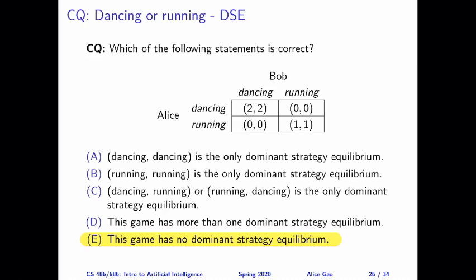Unfortunately, this means that the dominant strategy equilibrium solution concept is not sufficient to capture our intuition about this game. Intuitively, we believe that dancing-dancing or running-running are both reasonable outcomes, but dominant strategy equilibrium doesn't give us a prediction of how the players will behave. So we need to look at another solution concept — Nash equilibrium — which would be useful to predict the players' behavior. In the next video, I'm going to introduce Nash equilibrium in more detail and then use it to analyze this game. Thank you very much for watching. I will see you in the next video. Bye for now.